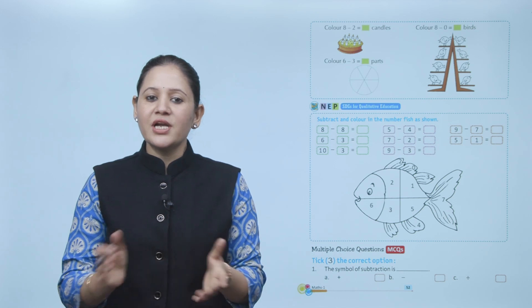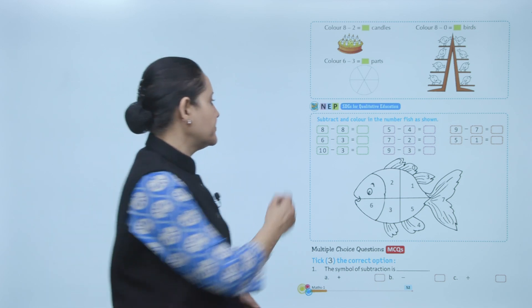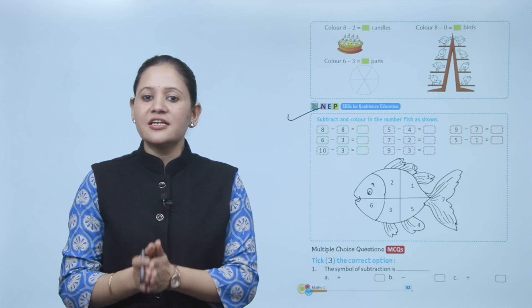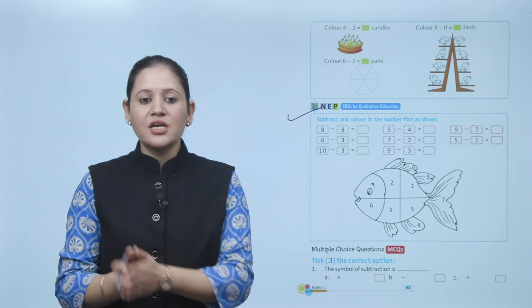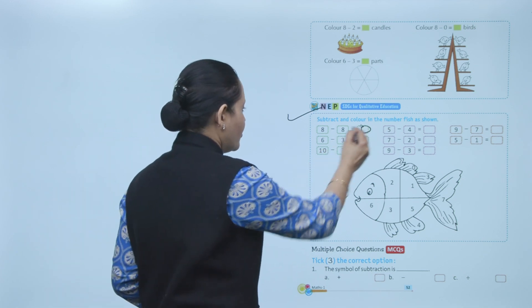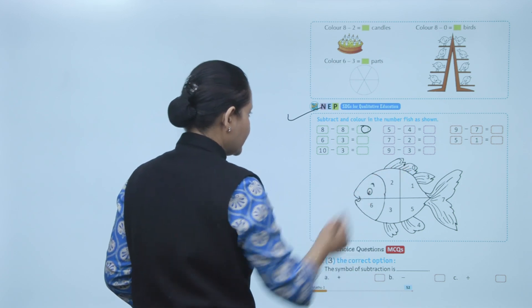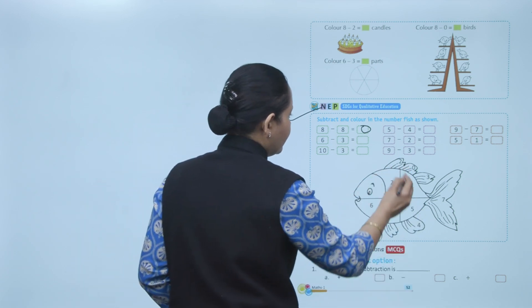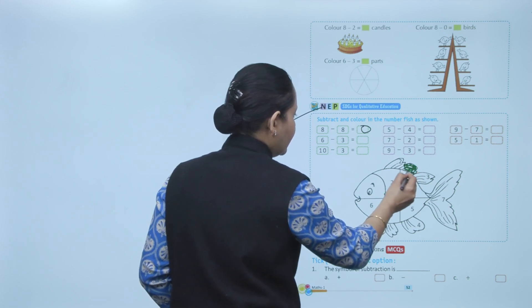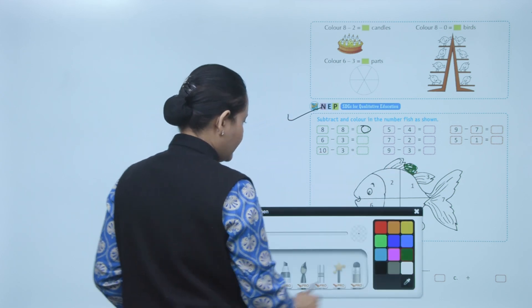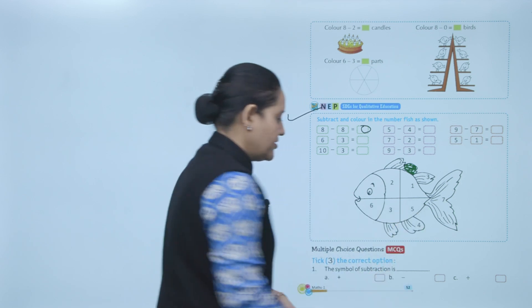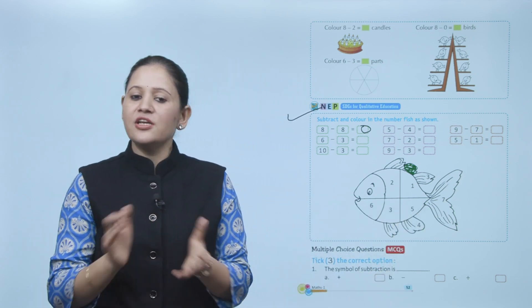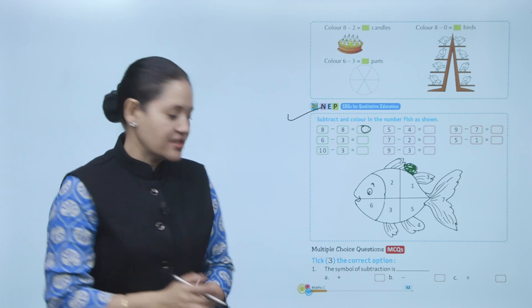Next is STG for qualitative equation — subtract and color in the number fish as shown. 8 minus 8 equals 0, so find number 0 and color it green. Like this, you will color number 0 green. Subtract the numbers and accordingly color them.